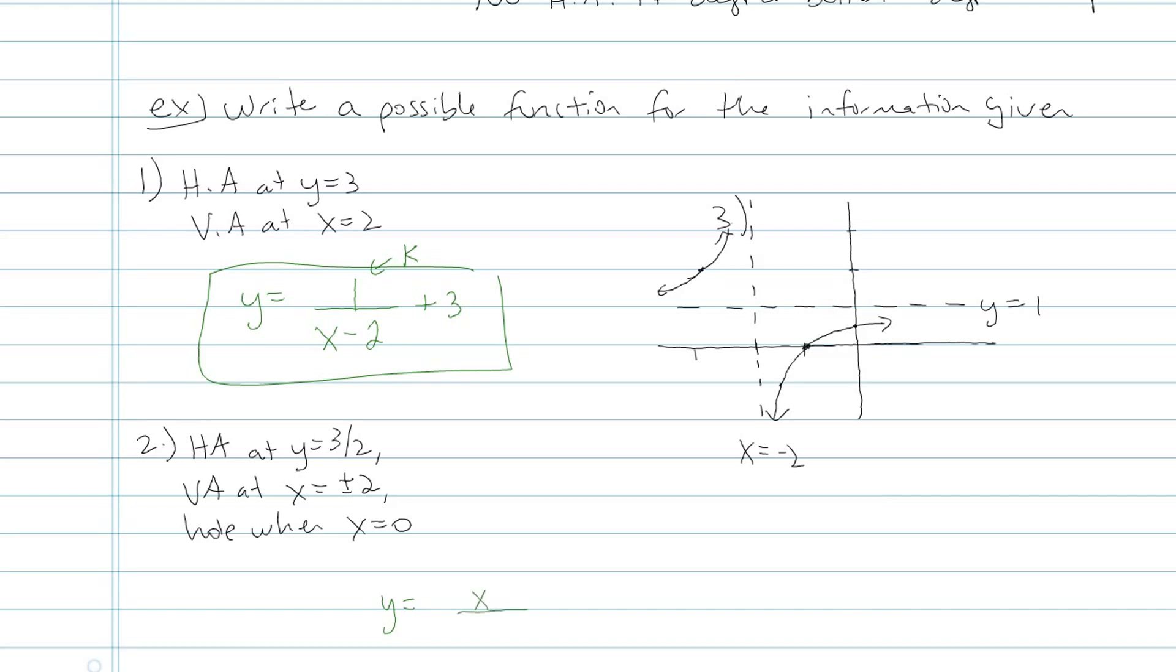I know that if there's a hole at x equals 0, that means I have to cross out x on top and bottom. Next thing I'm going to look at is the vertical asymptotes. Vertical asymptotes are factors of the bottom that didn't get crossed out. So there's my two vertical asymptotes. And then I have a horizontal asymptote at y equals 3 over 2. So if y is equal to 3 over 2, I have to go back to these original three scenarios.